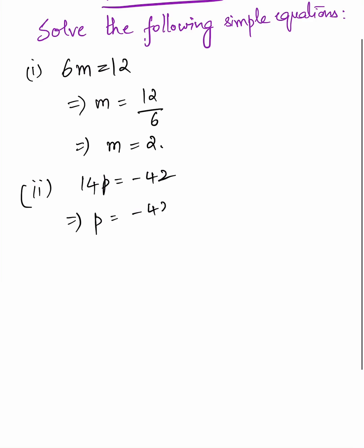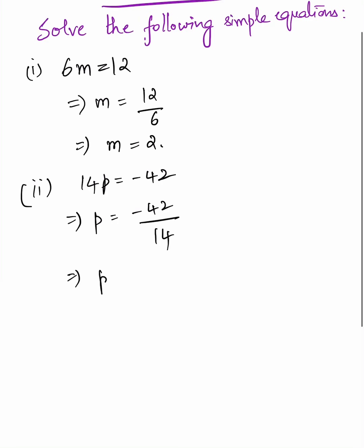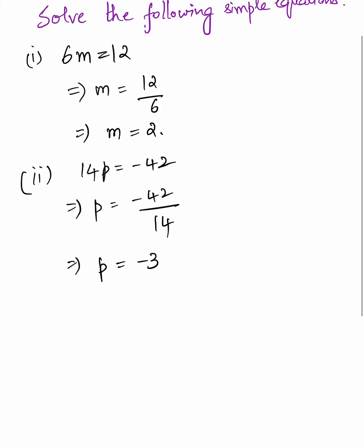Second: 14p equals minus 42, implies p equals minus 42 divided by 14, implies p equals minus 3. This entire exercise can be solved using transposition: plus becomes minus, minus becomes plus, multiplication becomes division, and division becomes multiplication.